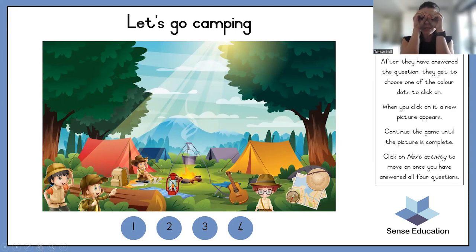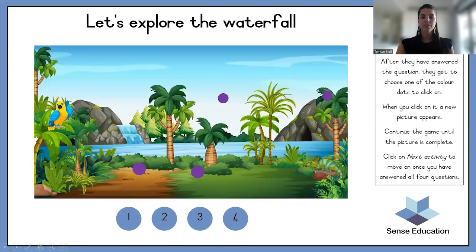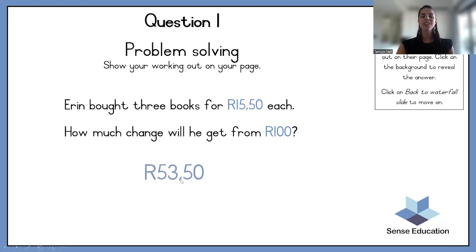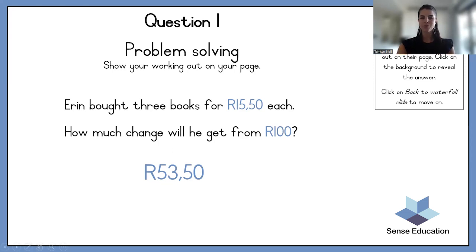Let's put on our exploring goggles and look — the waterfall! Let's explore the waterfall. We have some problem solving now. Pause this video, try and work out the problem, then I'll reveal the answer. Erin bought three books for 15 rand 50 cents each. How much change will he get from 100 rand? The answer is 53 rand 50 cents. You would add 15 rand 50 cents three times, then subtract that total from 100 rand.